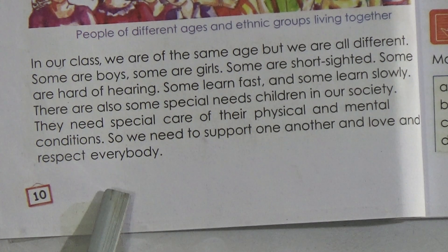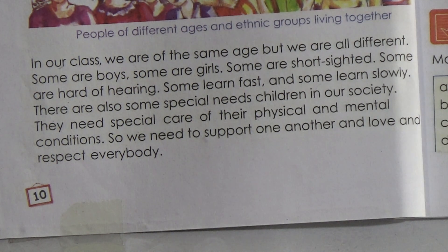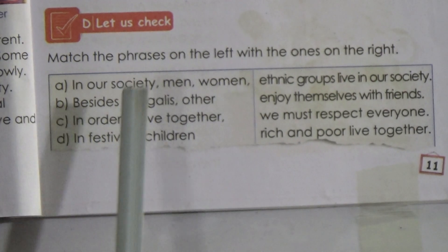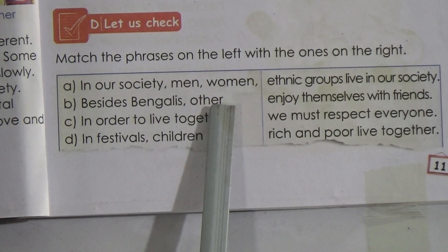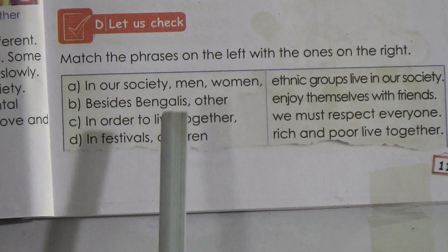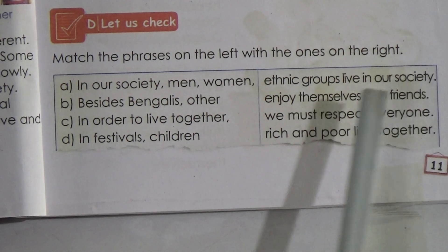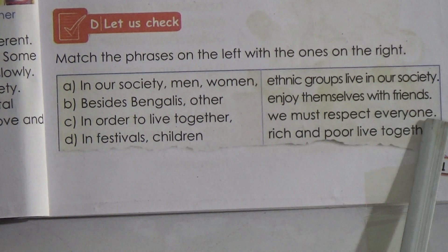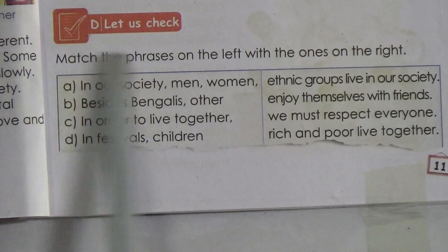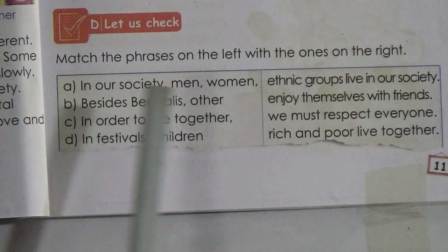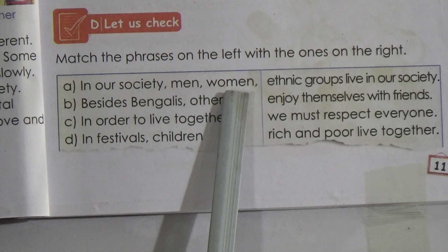So we have to respect all. Now students, come to page number 11. Here you can see a matching exercise. On this side: (a) in our society men, women; (b) besides Bangalis, other; (c) in order to live together; (d) in festivals, children. On the other side: ethnic groups live in our society; enjoy themselves with friends; we must respect everyone; rich and poor live together.